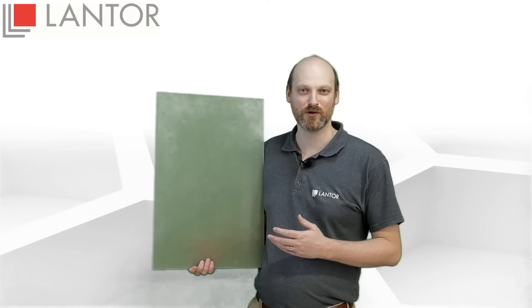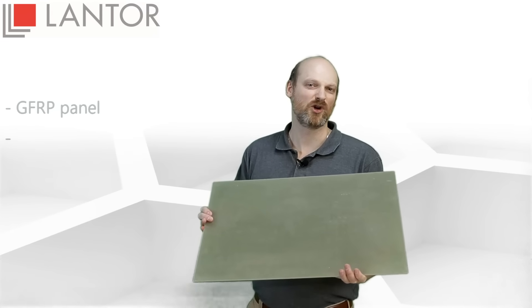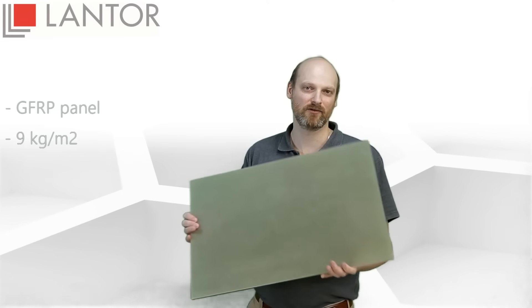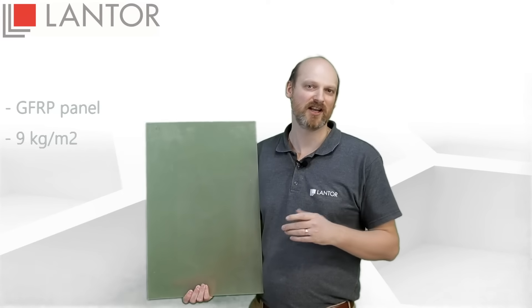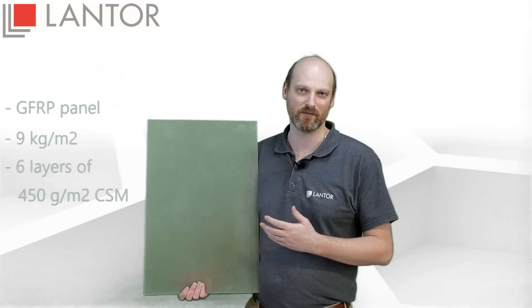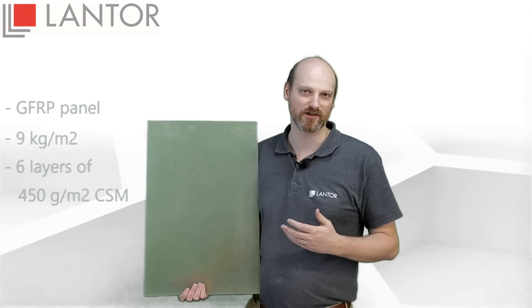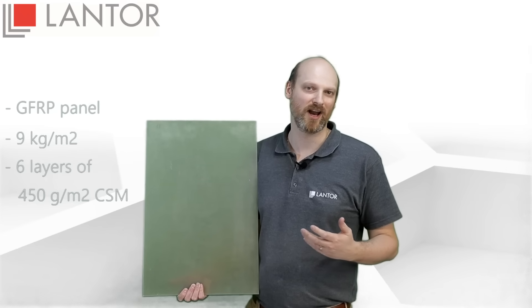The part we will be using as our example is six millimeters thick and quite heavy at nine kilograms per square meter. It is made up of six layers of 450 gram chop strand mat and its only purpose is to carry a load without bending too much.